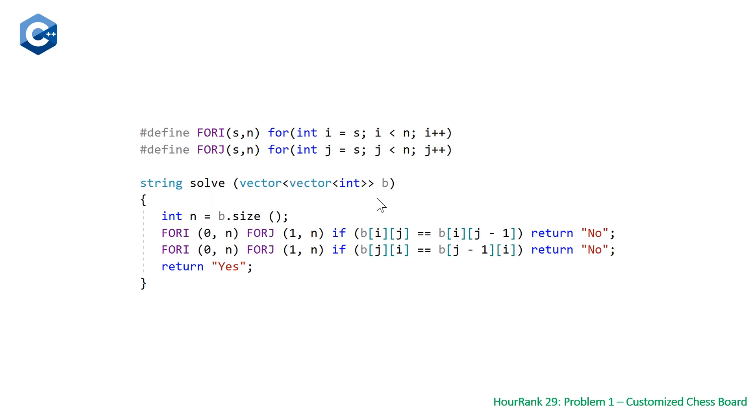which takes in a vector vector of integers representing our chessboard, and we're going to return a string which is either going to be yes or no. And on our first line, we're just storing the size of our rows and columns in n. And then we have our nested for loops, one for the row major traversal and one for the column major traversal.